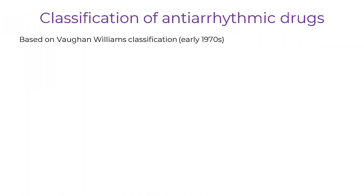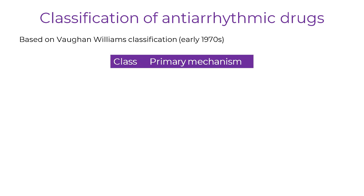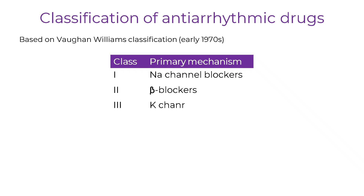Anti-arrhythmic drugs are commonly classified using a modified version of the Vaughan-Williams system, first developed in the early 1970s. This system divides anti-arrhythmics into four main classes based on their primary mechanism of action. Class 1 drugs block sodium channels, class 2 are beta blockers, class 3 primarily block potassium channels, and class 4 are calcium channel blockers.